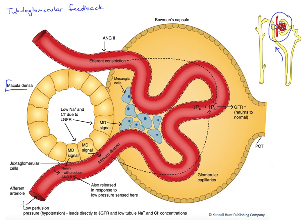Let's look at an initial perturbation: low perfusion pressure, a fall in blood pressure — hypotension — is going to lead to a fall in blood hydrostatic pressure in the glomerular capillaries. If you recall, PC, this blood hydrostatic pressure, is the driving pressure for filtration at the glomerulus, so if PC falls, GFR is going to fall — and we need that to not occur. Once PC falls and GFR falls, the flow rate along the nephron is going to go down.